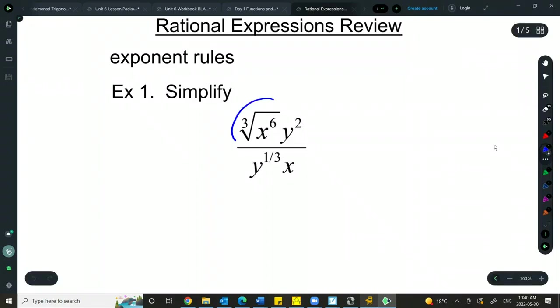So, does anyone remember how we switch a root into a rational exponent? What would this look like? Chris? Yeah, so it will be this over what's on the outside, so 6 over 3. And then we have y squared, y to the 1/3, and x.